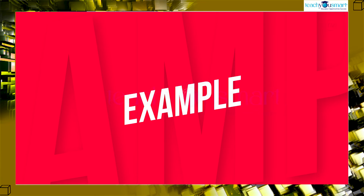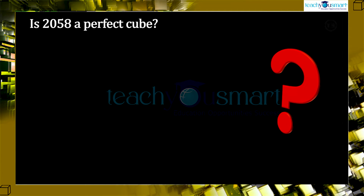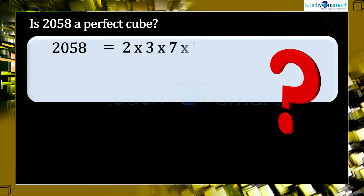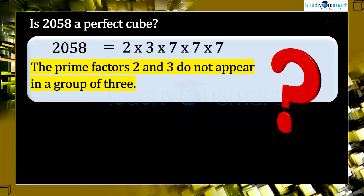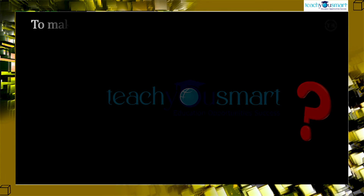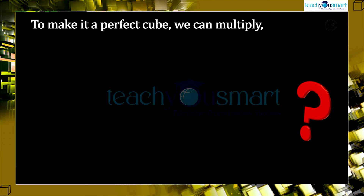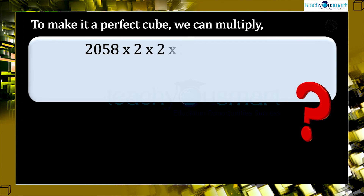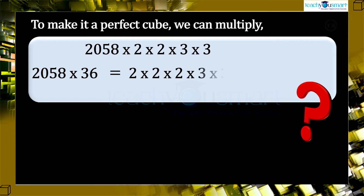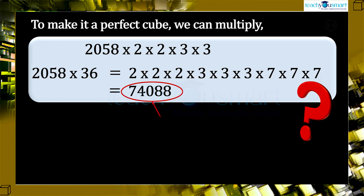Let's do another example. Is 2058 a perfect cube? 2058 = 2 × 3 × 7 × 7 × 7. The prime factors 2 and 3 do not appear in a group of 3, therefore 2058 is not a perfect cube. To make it a perfect cube, we multiply 2058 by two 2's and two 3's: 2058 × 2 × 2 × 3 × 3 × 3 × 3 × 7 × 7 × 7 = 74,088, which is a perfect cube.